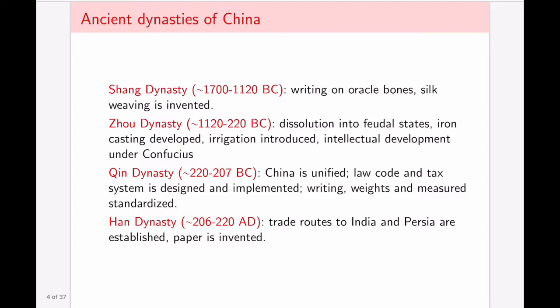First of all, here are some ancient dynasties of China and some of the developments that have taken place during those periods of time. So back in minus 17 to 1100 BC, we have Shang Dynasty, and this is where we're finding artifacts such as writing on oracle bones, and silk weaving is already invented.